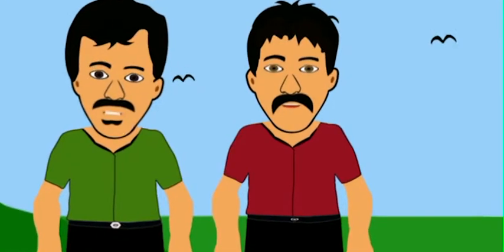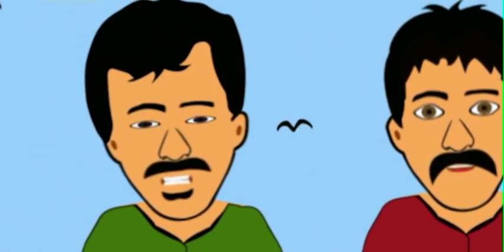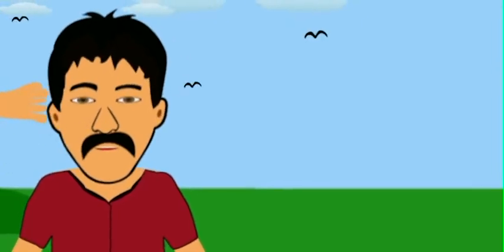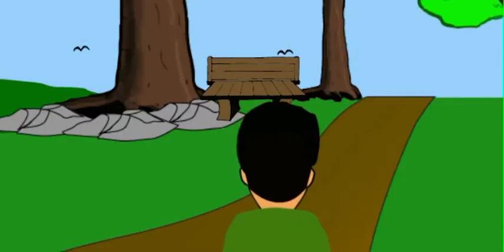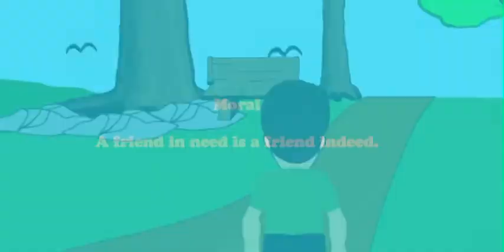Raju asked Vijay, what did the bear whisper into your ear? Vijay replied, the bear asked me to stay away from friends like you, and he went away.